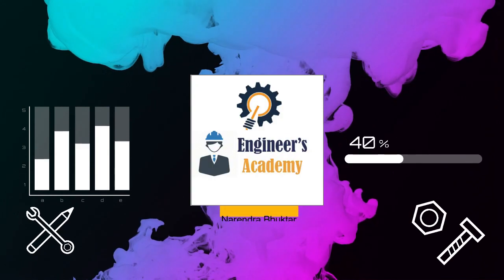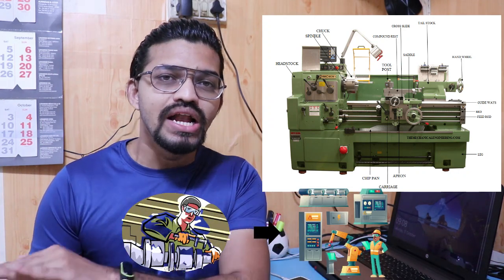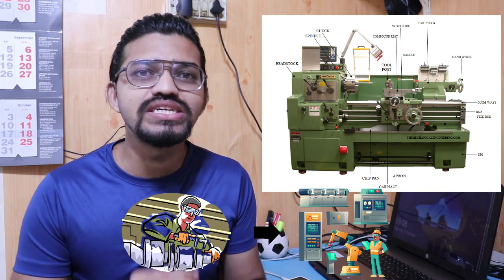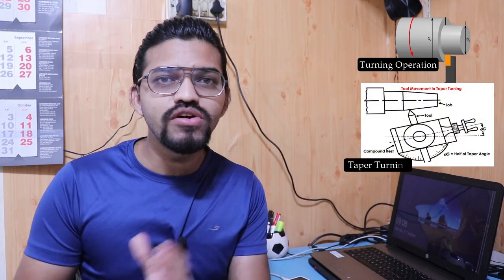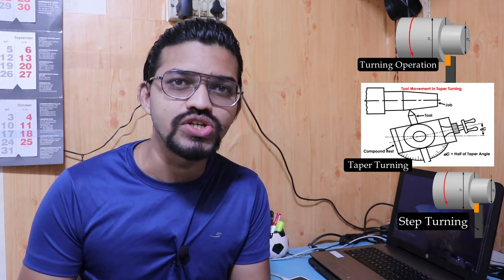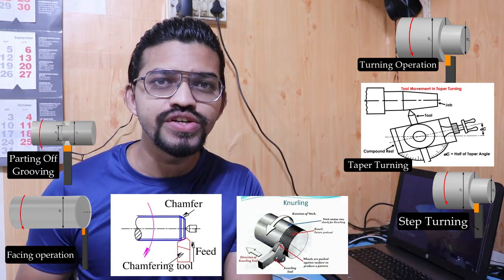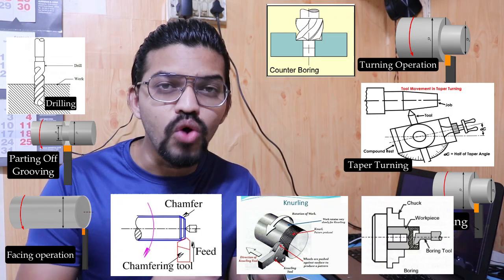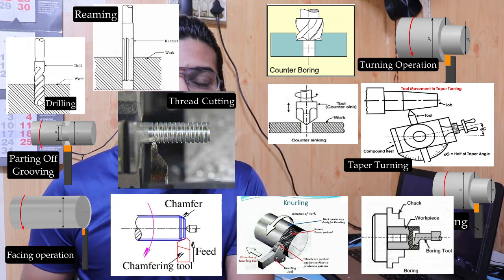The lathe is considered the mother of all machines. From a job shop production system up to mass production, any type of production system requires this machine to carry out the majority of operations. The operations we can perform on the lathe machine include: turning (normal, taper/angular, step, and shoulder turning), facing, chamfering, knurling, parting off, grooving, drilling, boring, counter boring, counter sinking, reaming, and threading.